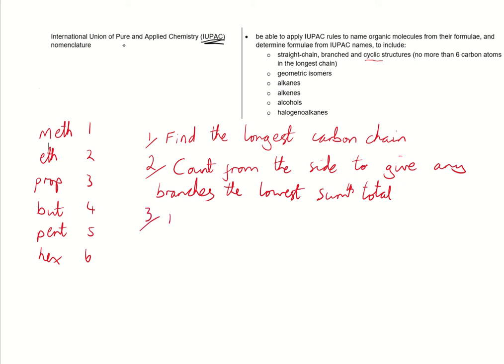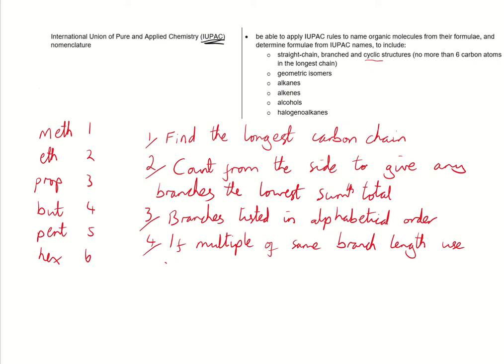Step 3: Branches have to be listed in alphabetical order. If there's multiple of the same branch length, you can use di, tri, or tetra to shorten them, but ignore for alphabetical purposes.